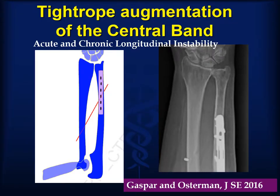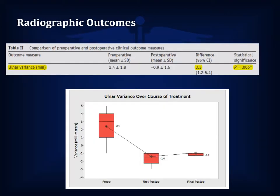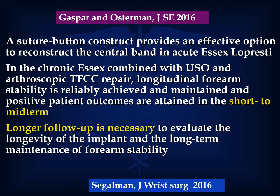Our group began using the suture button technique clinically in acute Essex-Lopresti injuries and in some cases of chronic instability. Gaspar reported our short-term results in 2016. At three years, the clinical results were similar to our pronator teres rerouting cases — range of motion of the elbow, forearm, and wrist were maintained, and grip strength and DASH scores improved. Radiographic parameters based on ulnar variants showed maintenance of stability over time. We concluded, as did a similar study by Siegelman, that the suture button construct was an effective adjunct for central band stabilization, provided that the elbow and wrist had been stabilized.